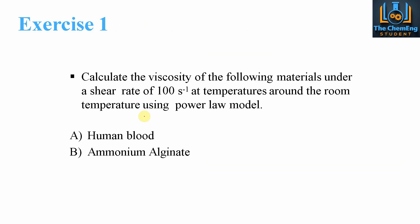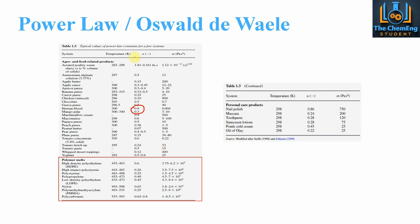In the working exercise, we are asked to calculate the viscosities of two materials — human blood and ammonium alginate — at a shear rate of 100 s⁻¹ at around room temperature, using the power law model. From the table, we get the values: for human blood, n = 0.9 and m = 0.004; for ammonium alginate, n = 0.5 and m = 13, respectively.